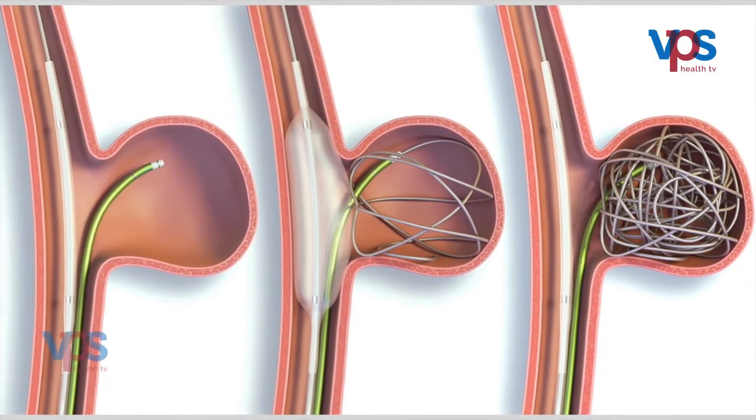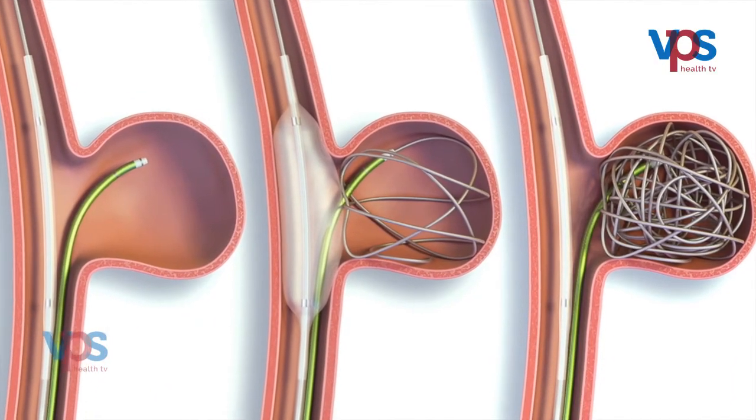Sometimes we cannot control the bleeding by these methods, so we have another technique called endoscopic ultrasound-guided coiling of the gastric varices. This is an excellent tool where we can block the vessels and completely stop the bleeding. We started it about three years back and now have more than 50 cases with excellent results.